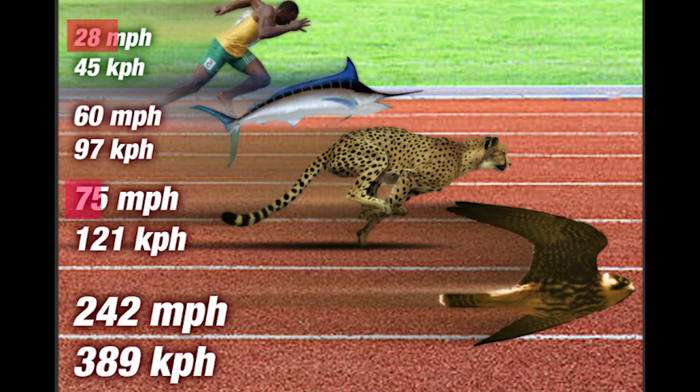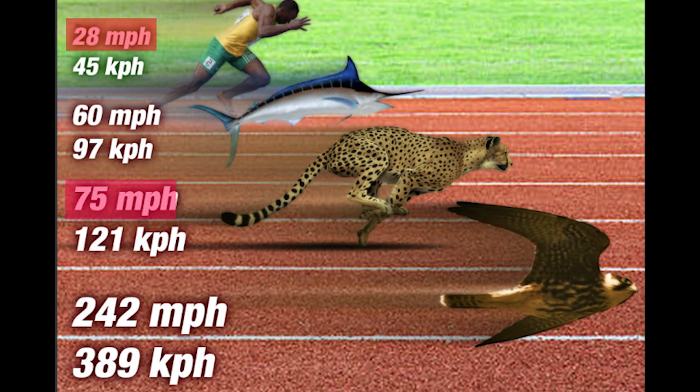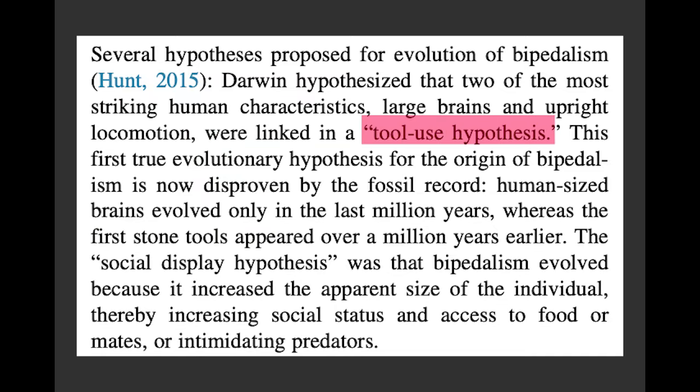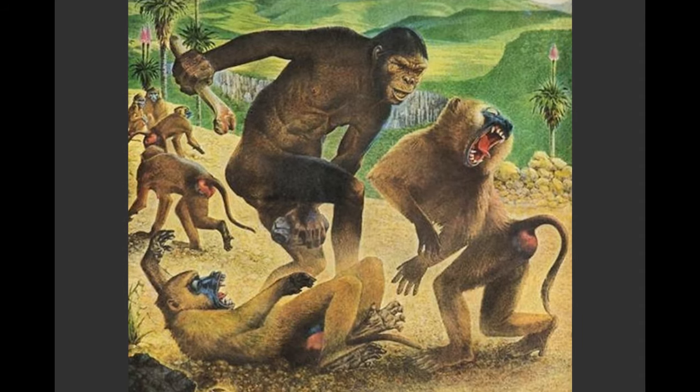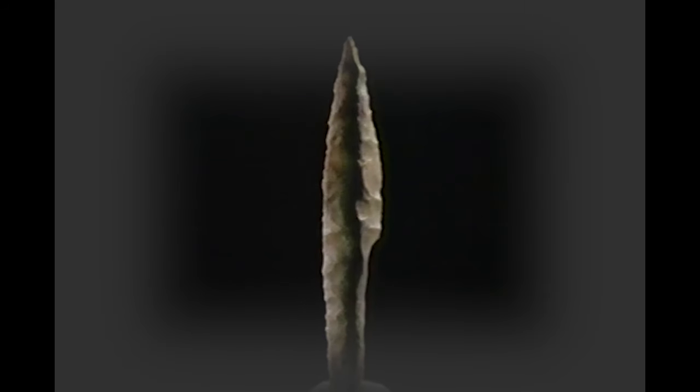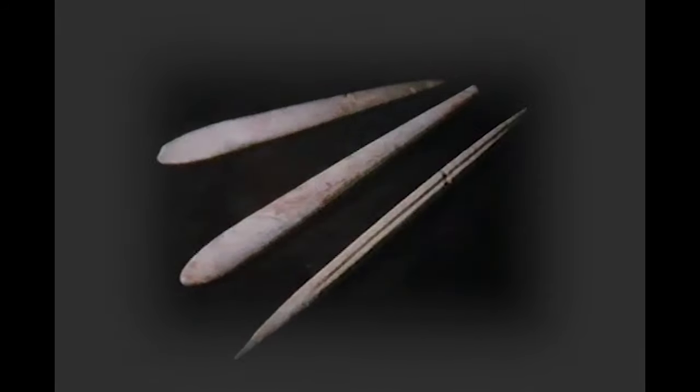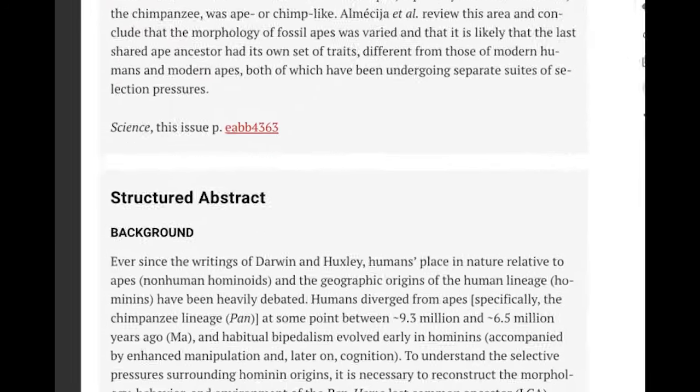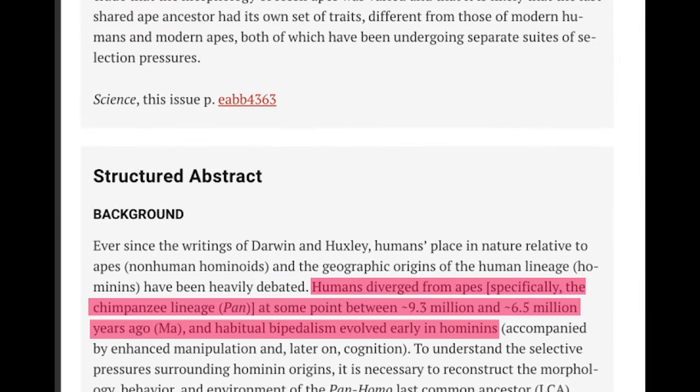One theory suggests bipedalism evolved for enhanced speed, which is obviously wrong. Another theory ties bipedalism to tool usage, which is what Darwin believed, and suggests activities like hunting led to bipedalism, specifically so hominids could be free to use their hands for weapons. However, even this theory faces criticism. As the earliest evidence of stone tools dates back only to about 3.3 million years ago, which is way after hominids had already adopted bipedalism.